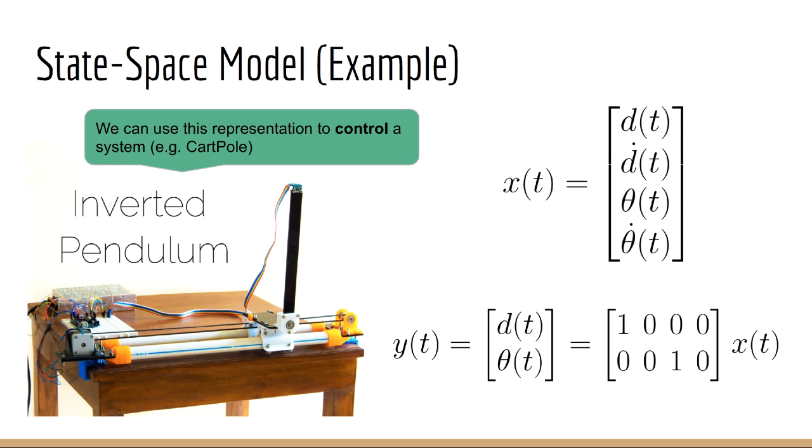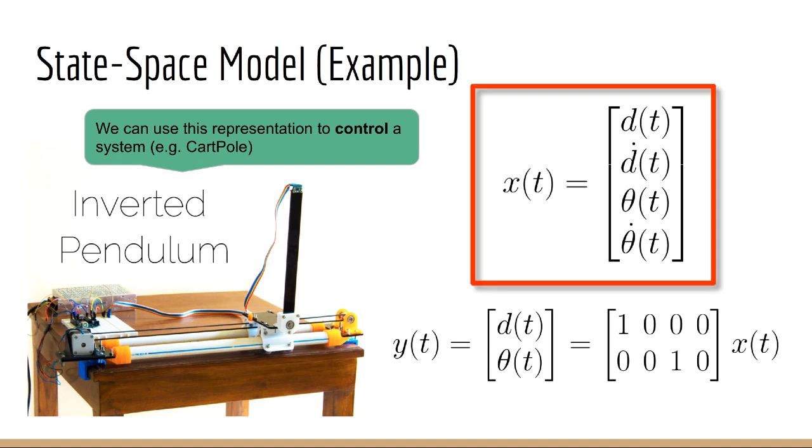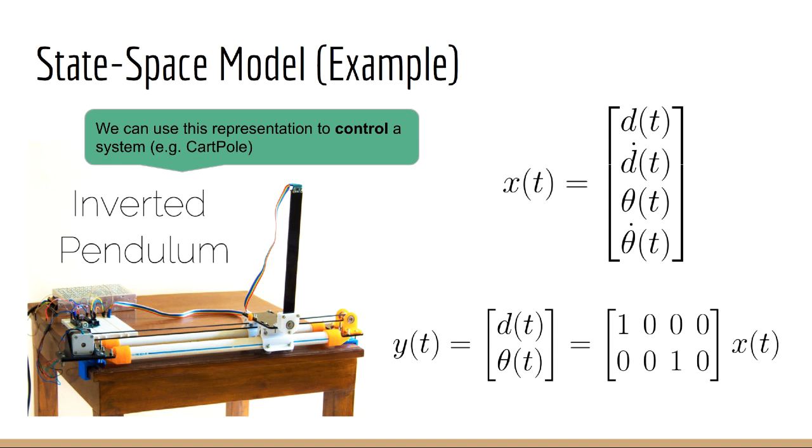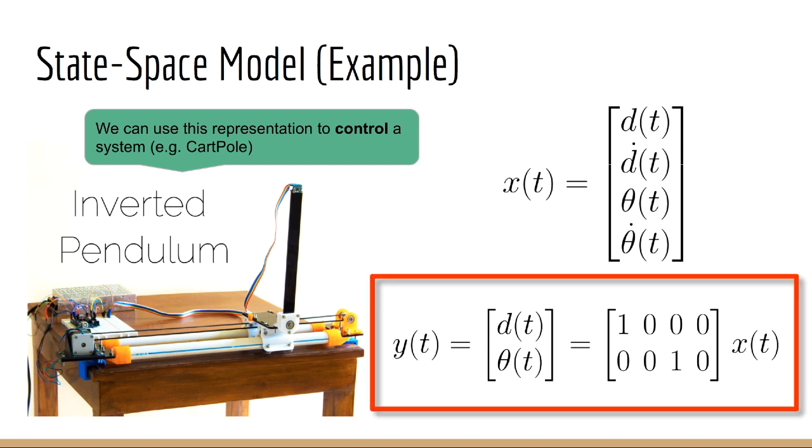So as an example of how this relates to our equations, we might represent our state vector with four measurements, which are horizontal displacement, horizontal velocity, angle from the vertical, and angular velocity. What we get to observe might only be the displacement and angle, since measuring velocity could be more difficult.